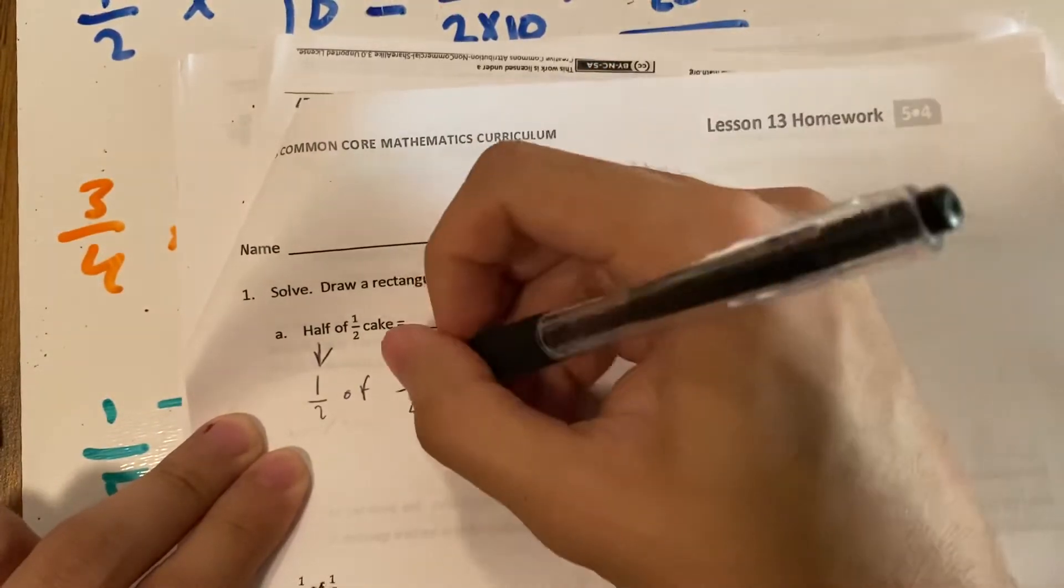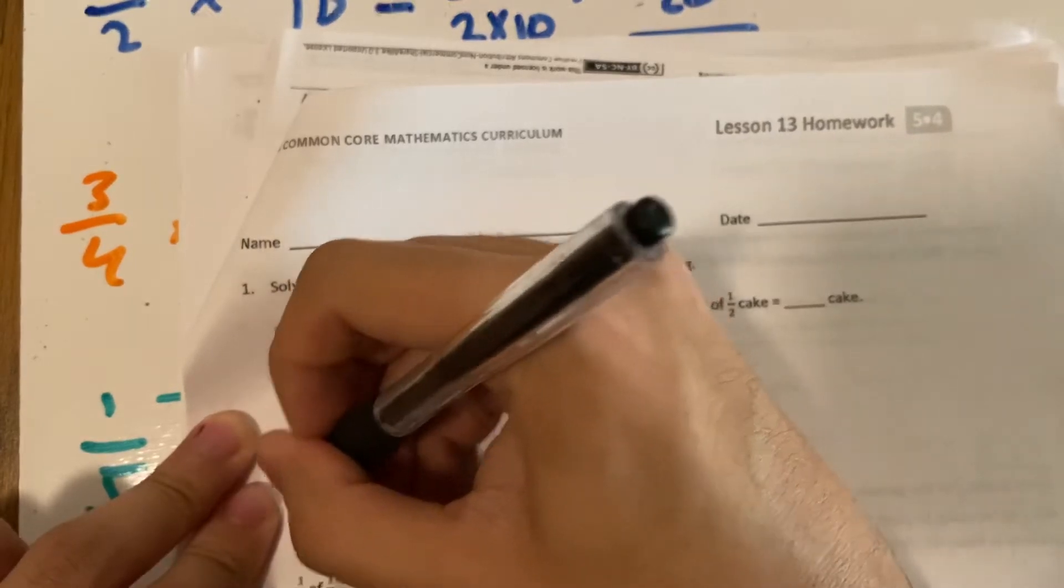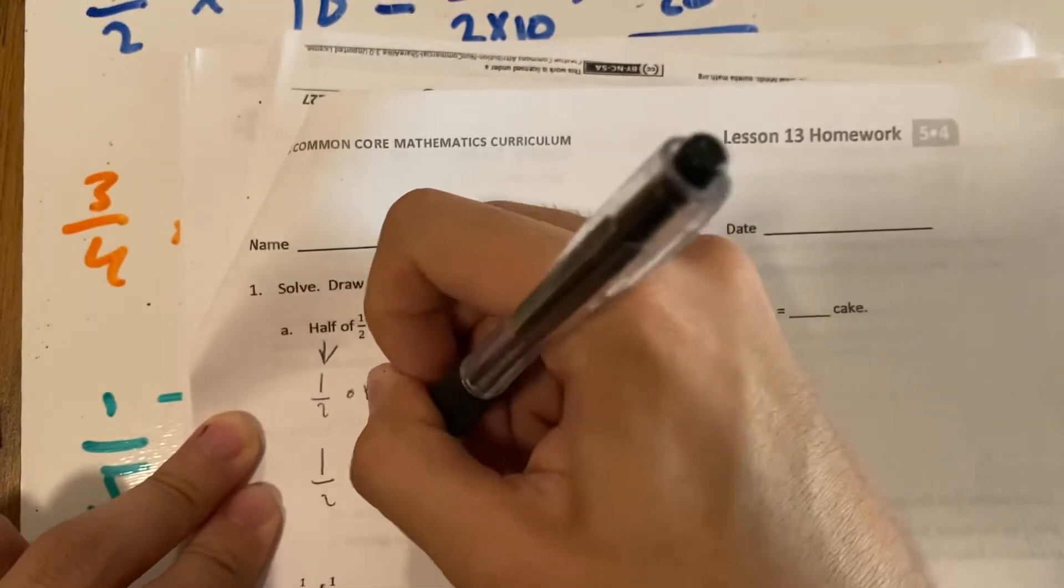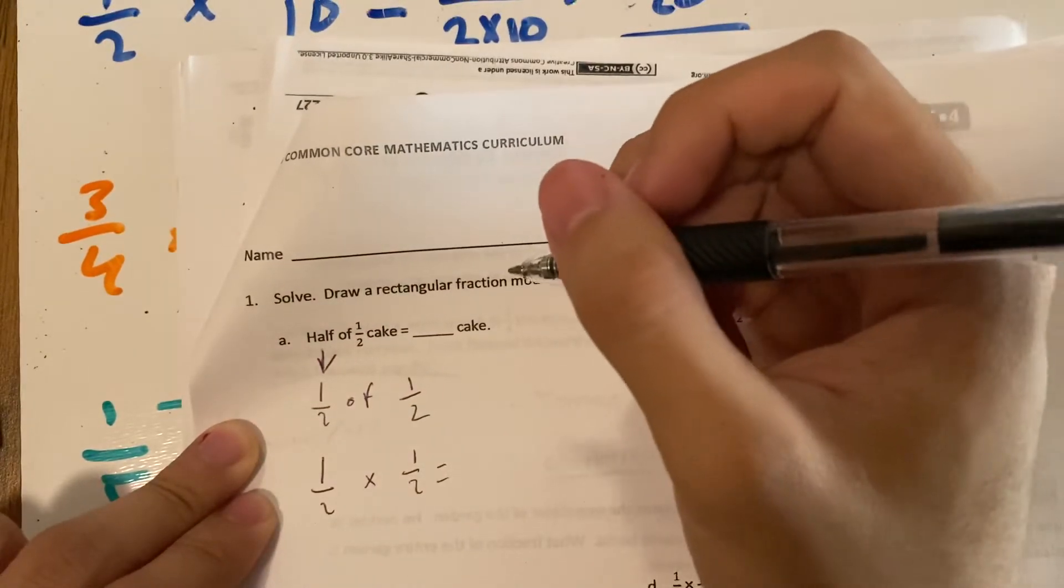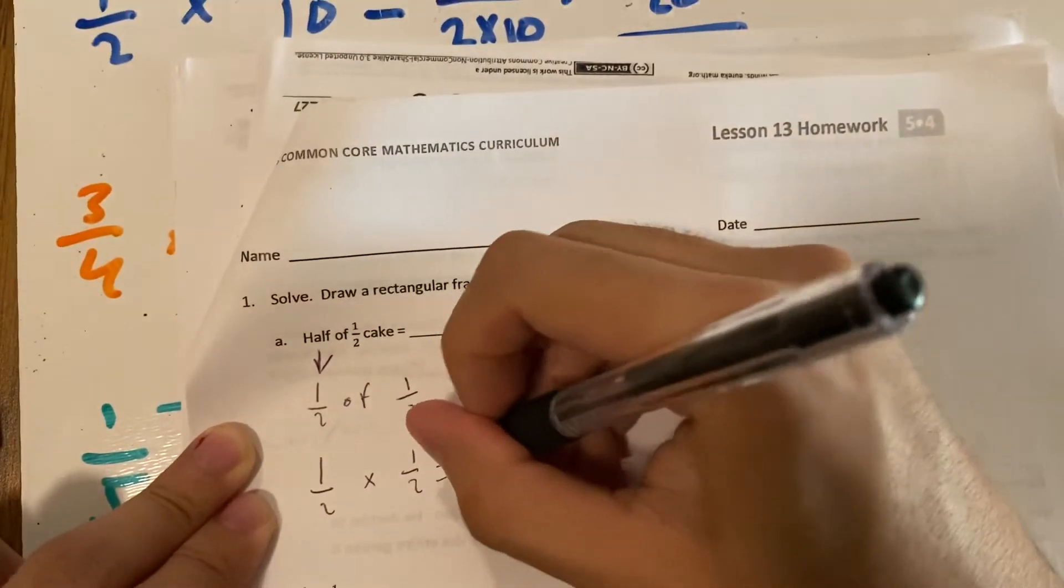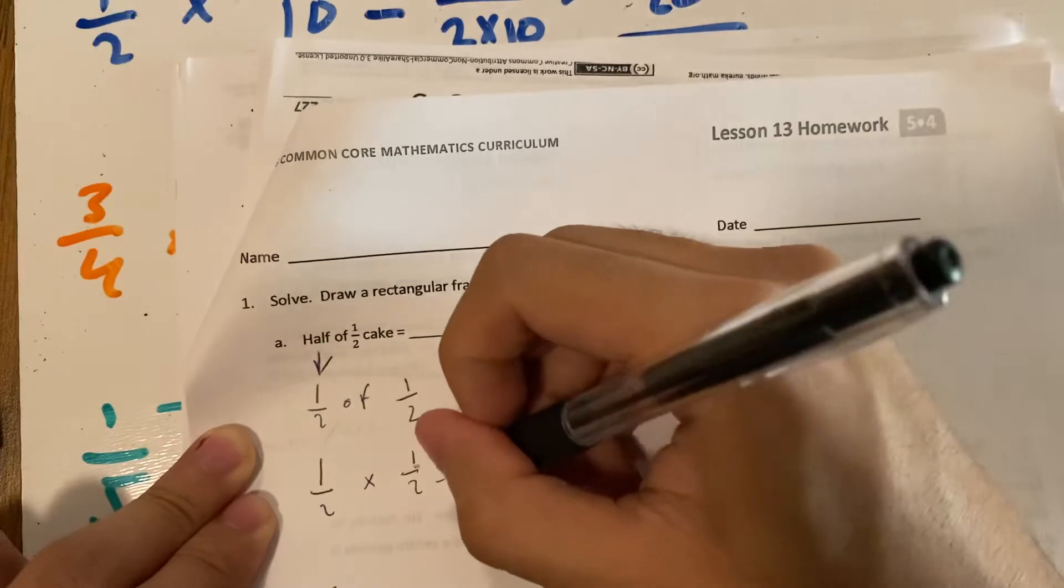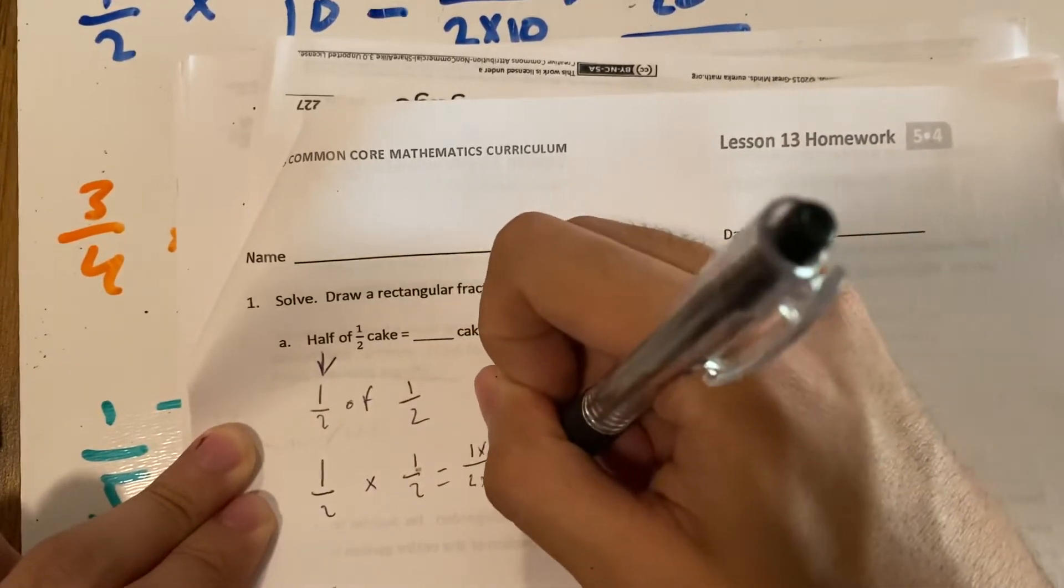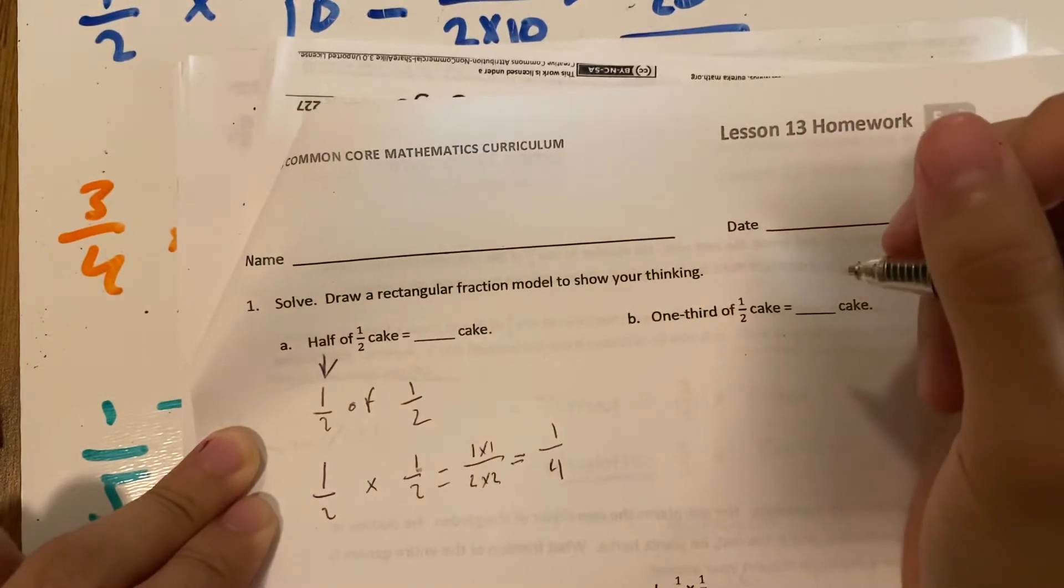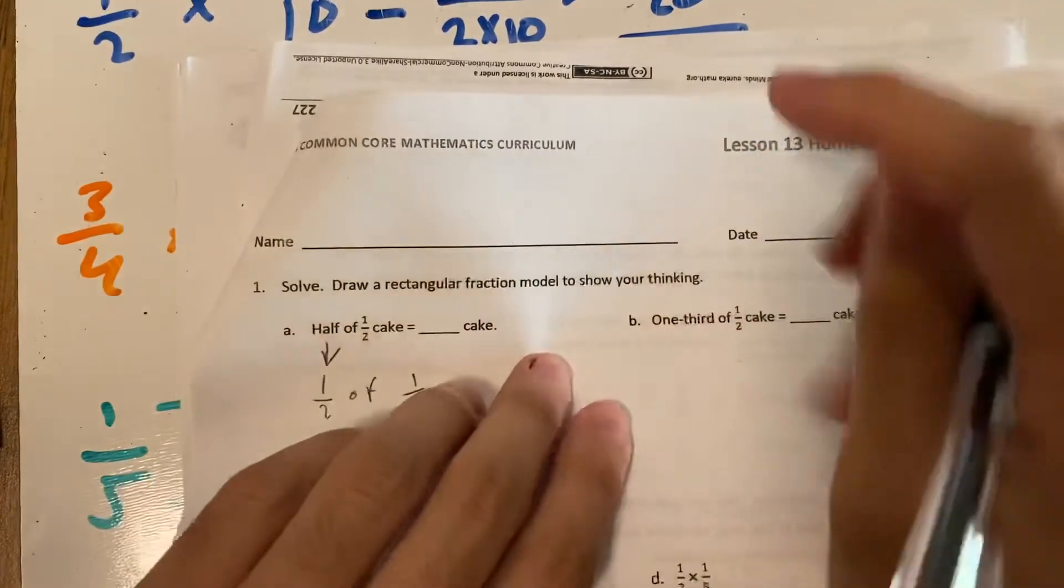So what does that mean? It means I'm gonna have to multiply one half times one half. Again, 'of' means multiply, much like our warm-up. So now I have one times one, two times two. One times one is one, two times two is four. And that is our answer.